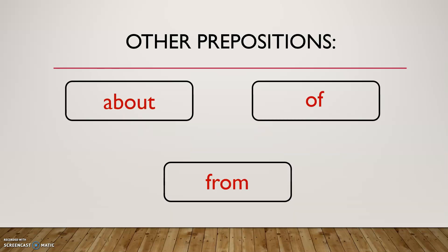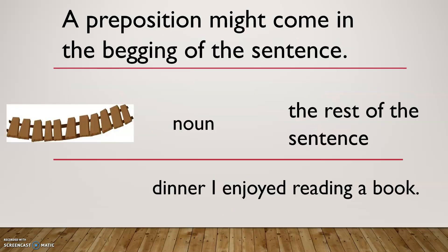Other prepositions are about, of, and from. You need to memorize those three because they call them random prepositions. Just, you need to memorize them. About, of, and from. For example, a preposition might come in the beginning of the sentence. Remember, all the examples we've discussed before, the preposition is in the middle. The bridge is in the middle of the sentence. But sometimes, it might come in the beginning. So, don't be confused. Look at this part.